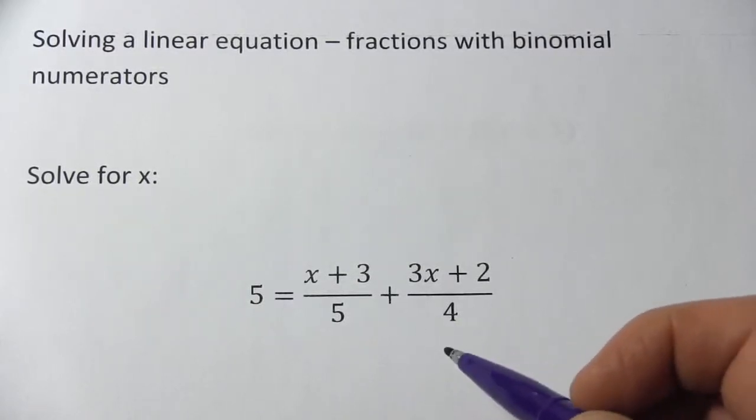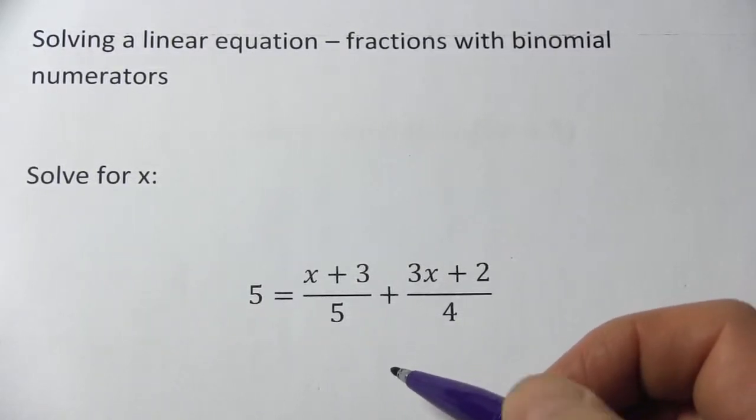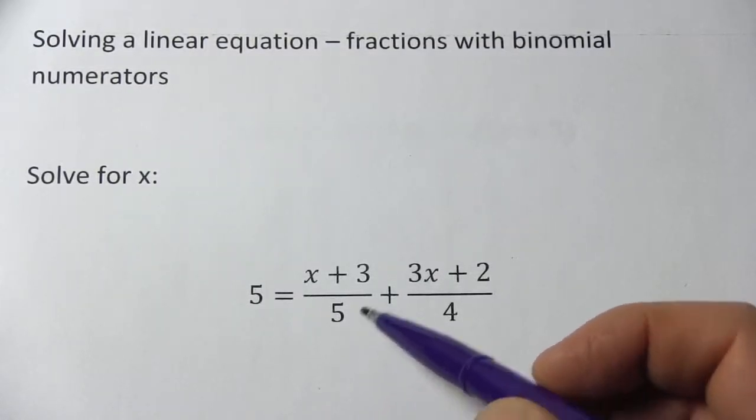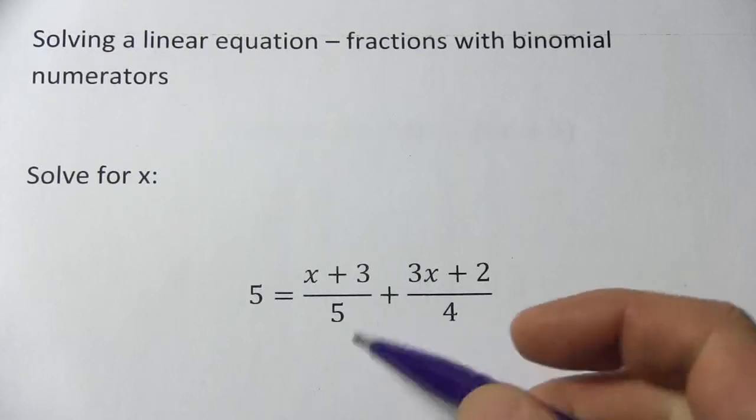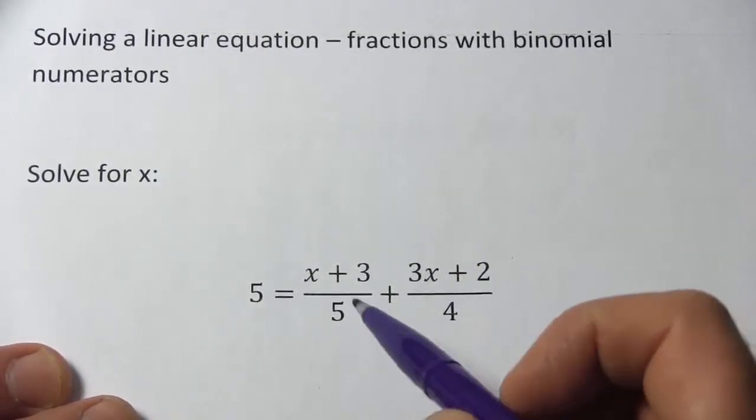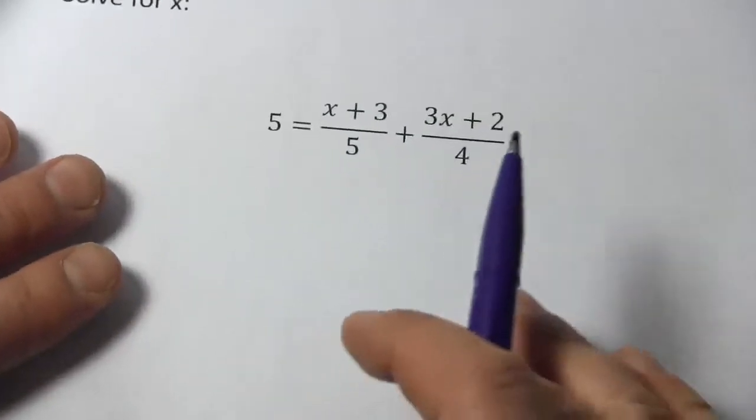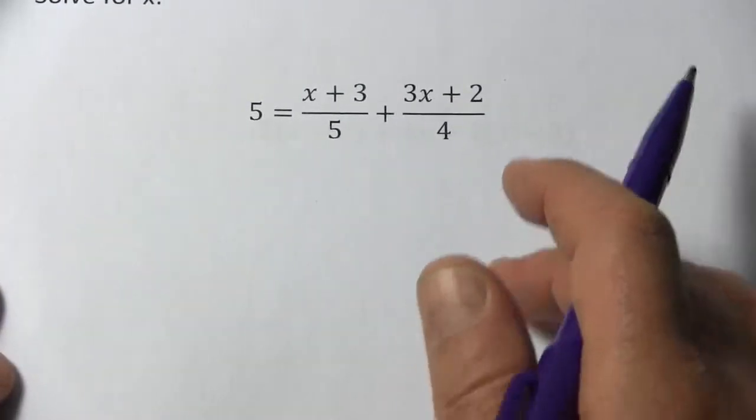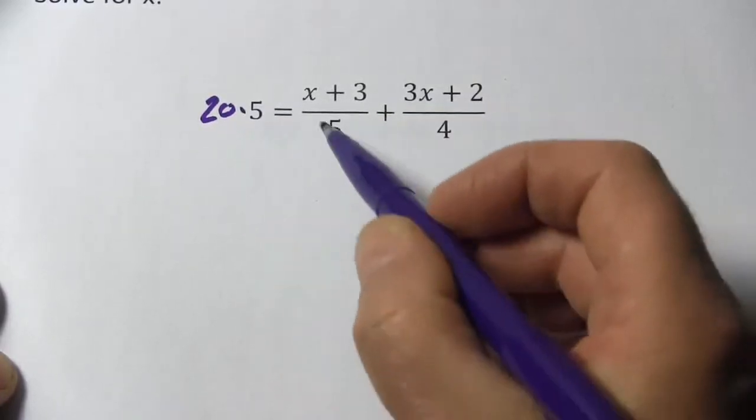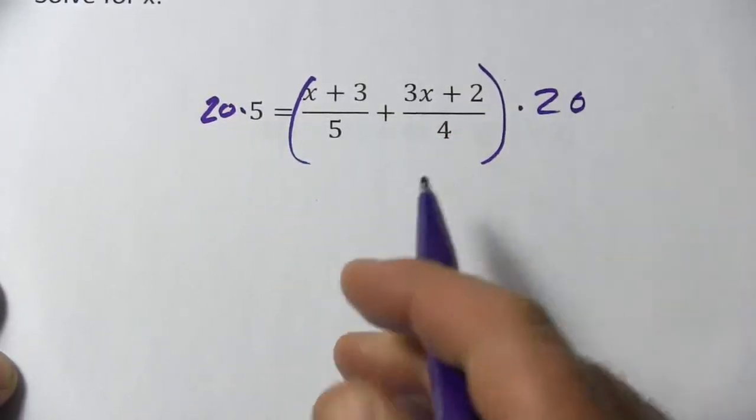Well, whenever you have fractions like this in an algebraic equation that you need to solve, I would suggest trying to get rid of the fractions. And we've been doing that by multiplying by a number where the denominators are factors. I've got a 5 and a 4 down here, so I think I'm going to multiply everything by 20. So this side of the equation gets multiplied by 20, and this side gets multiplied by 20.